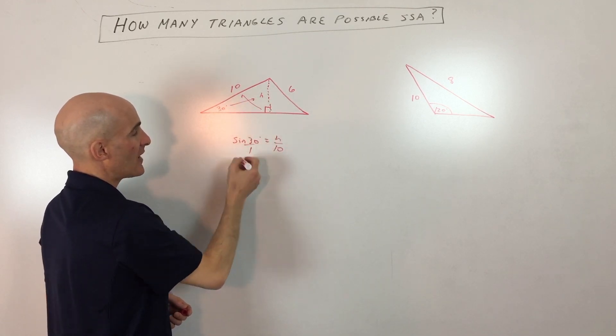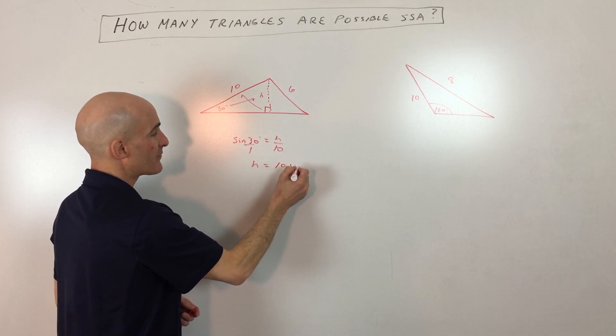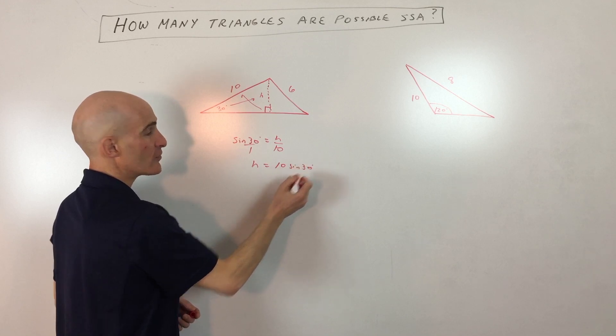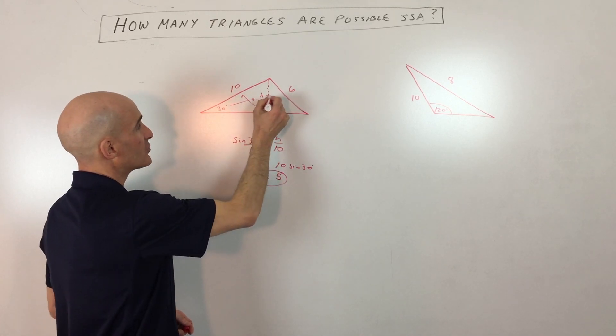If we cross multiply, H equals 10 times sine of 30. The sine of 30, you can use your calculator, or if you know this is a half, 10 times a half is 5. So this altitude is 5.